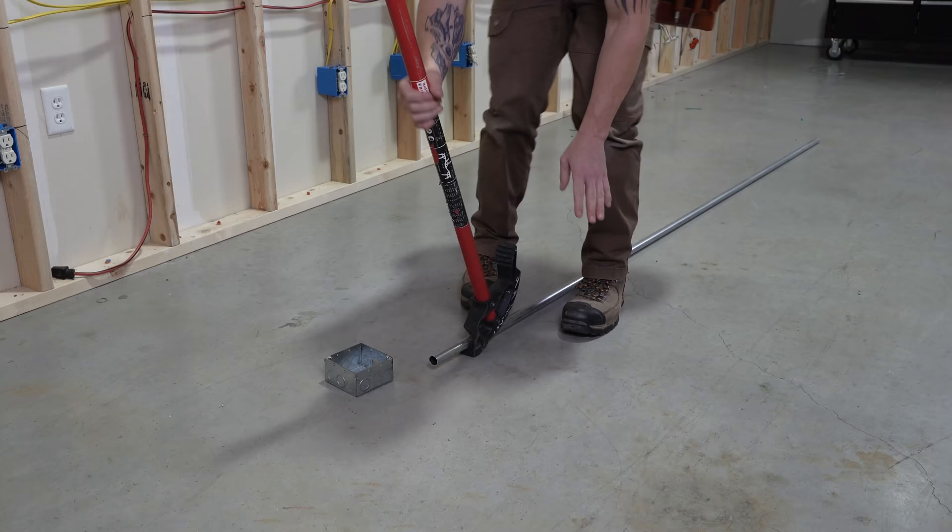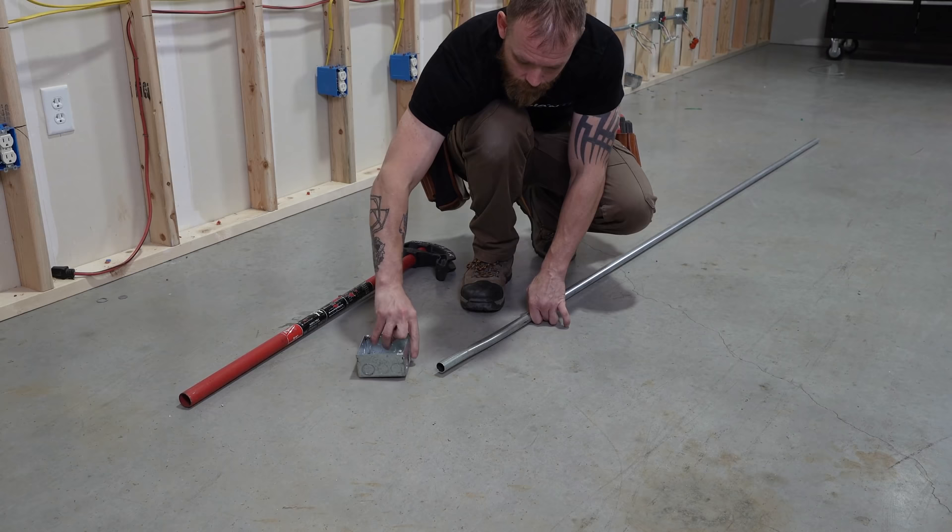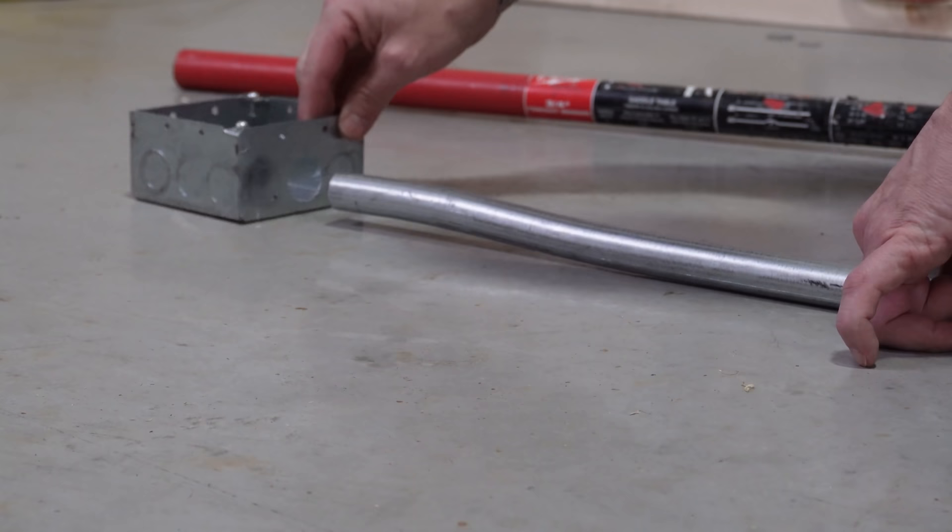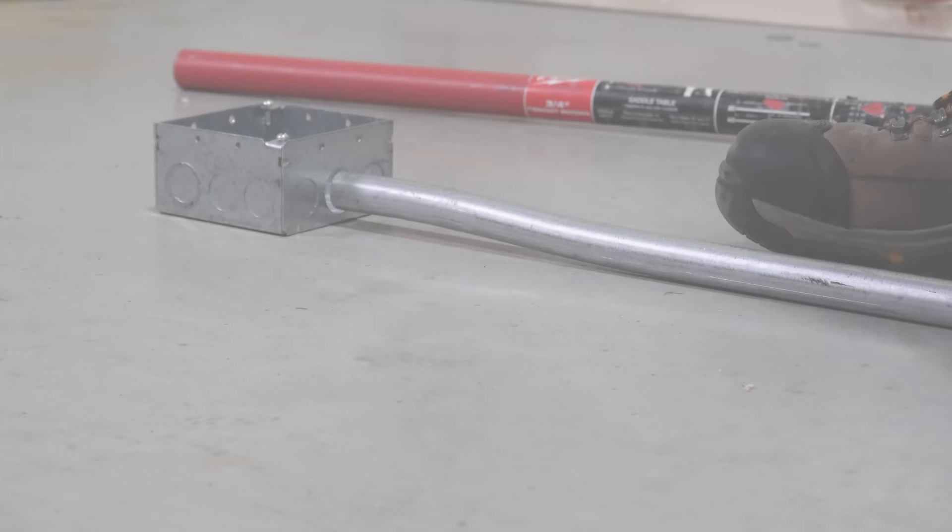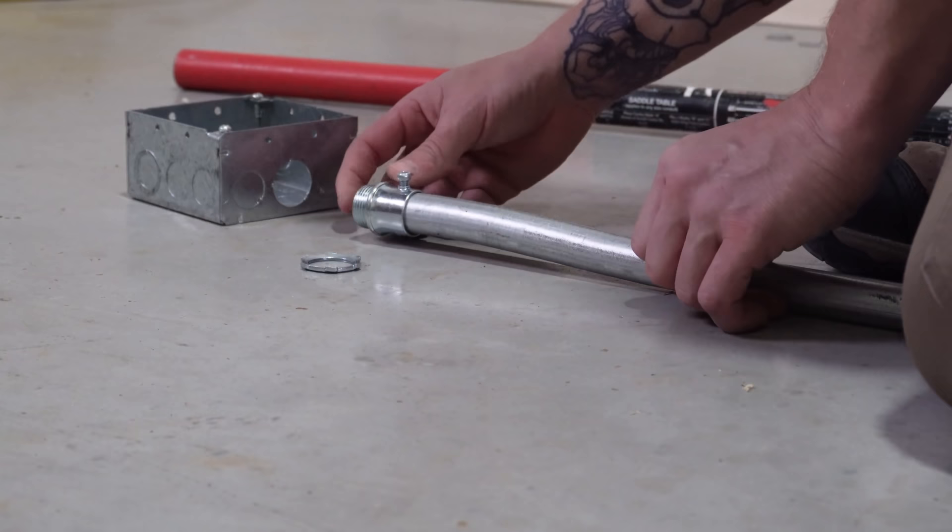Once we put it up there, boom, we see it's perfect. So now we're just going to take our connector and we're going to put the connector on the top of this. We want to make sure that the connector is facing us. We don't want to put it way off to the side or something like that.